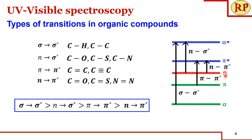We have another orbital called the non-bonding orbital, which occurs when lone pairs of electrons are present in heteroatoms such as oxygen, sulfur, nitrogen, etc. The different energy levels of the molecular orbitals are shown here. Different types of transitions occur, out of which sigma to sigma* requires the highest energy and n to pi* requires the lowest energy. When we have a compound, we can look at the bond and tell what type of transition occurs.